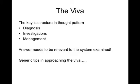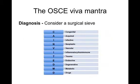The viva is often one part of the OSCE where students struggle quite a bit. However, it's all about having a structure. You will often be asked to offer differentials, investigations and instigate a basic management plan. Make sure the answers you give are relevant to the system you've examined. The OSCE viva mantra has three stems: diagnosis, investigations and management — and it's something to fall back on if you're stuck. If you can't remember any differentials, consider a surgical sieve to help you out.